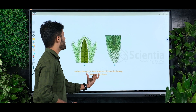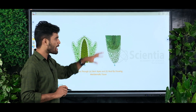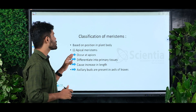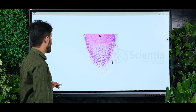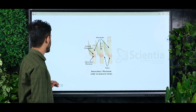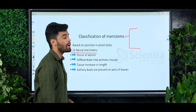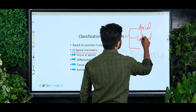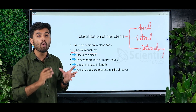At the stem apex and root apex, we have meristematic and actively dividing cells. We have to classify the meristem. There are three types: one is apical meristem, the second is lateral meristem, and the third is intercalary meristem — apical, lateral, and intercalary meristem.